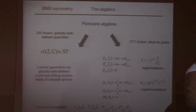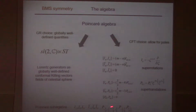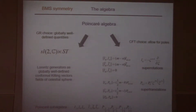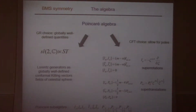The subalgebra is two copies of global conformal transformations plus, in a semi-direct way, four generators representing the four translations as seen at null infinity. If you do the counting, six is good for Lorentz, so from that point of view you're happy.